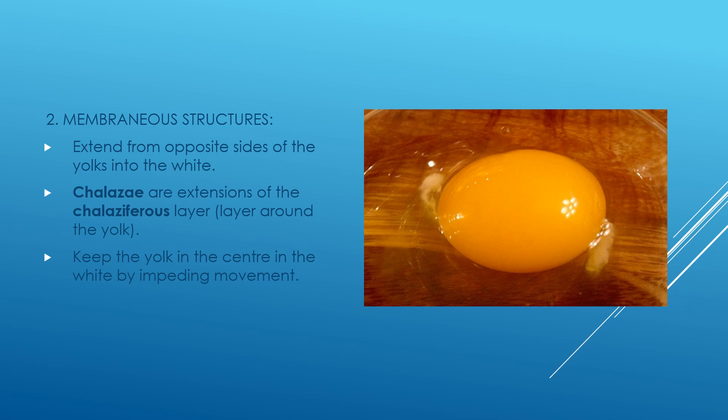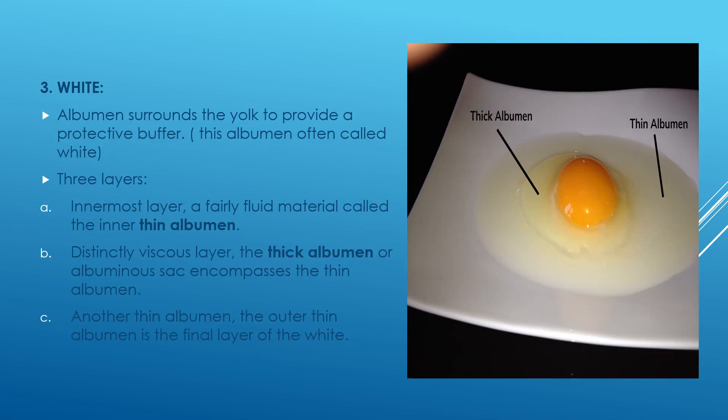Membranous structures that extend from opposite sides of the yolk into the white are known as the chalaza. These are extensions of the chalaziferous layer. It keeps the yolk in the center and prevents it from getting mixed with the white by impeding movement.